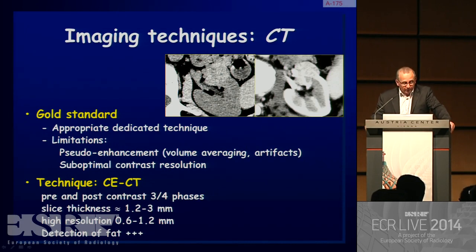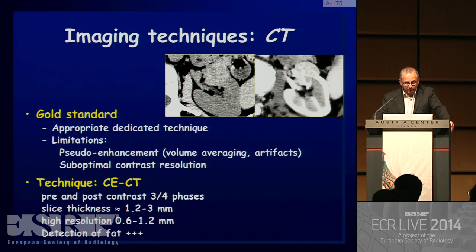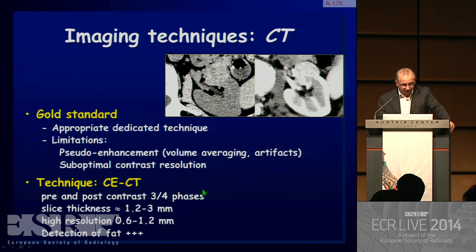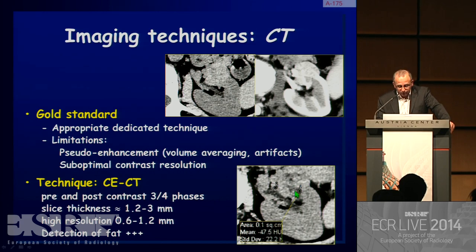CT remains the gold standard for assessment of small renal masses. It should be used with an appropriate dedicated technique but has some limitations, including pseudo-enhancement related to volume averaging, artifacts, and suboptimal contrast resolution. Basically, three or four phases are required for characterization of renal masses, using slice thickness between 1 and 2 millimeters, sometimes with higher resolution to identify small spots of fat inside a lesion.